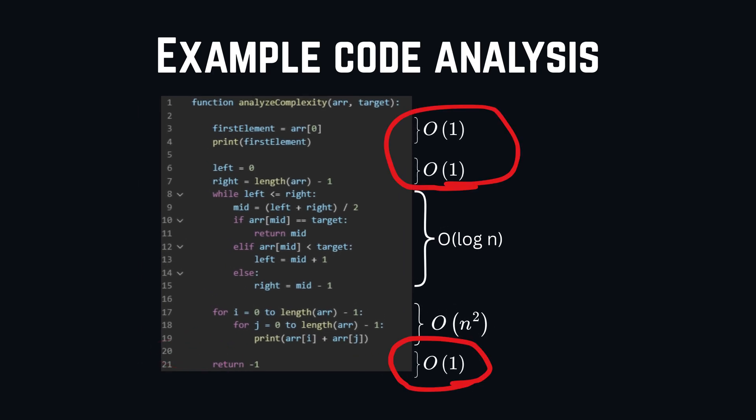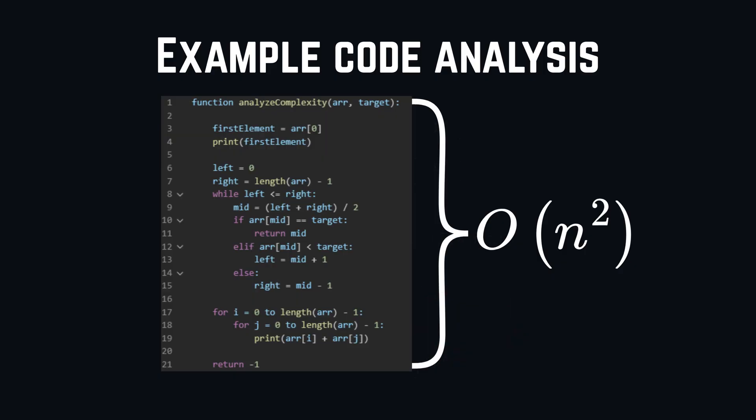Alright, we went over the code now. We had a couple of O of 1s. And we had O of log n. And lastly, we also have O of n squared. So, our final answer for this whole function is O of n squared. Because this is the biggest term out of them all.